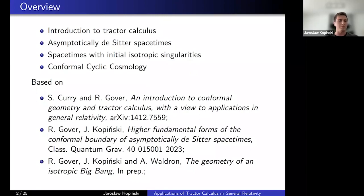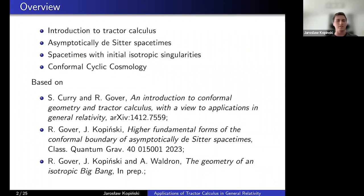Those two points will lead me naturally to the last part, which is about conformal cyclic cosmology. Here I'll present a general way of constructing a CCC scenario where you want to identify the end state of asymptotically de Sitter spacetime with the initial state of spacetime with isotropic singularity.